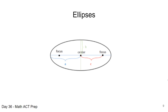For the ACT, the key things to know about ellipses are the center point, the horizontal and vertical axes, and the focus. Just like the parabola, the focus of an ellipse is inside the curve and lies only on the major axis. The foci are located c values away from the center in both directions along the major axis.